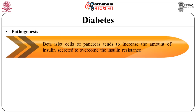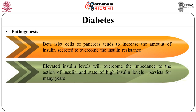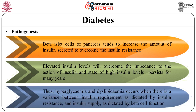Eventually, beta islet cells of the pancreas tend to increase the amount of insulin secreted to overcome insulin resistance. Elevated insulin levels will overcome the impedance to insulin action, and this state of high insulin level persists for many years. Thus, hyperglycemia and dyslipidemia occur when there is a variance between insulin requirement as dictated by insulin resistance and insulin supply as dictated by beta cell function.